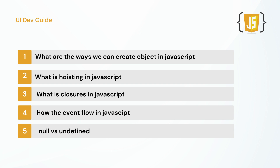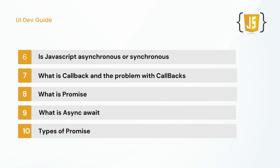The next question is null and undefined. This is also a common question. It is related again to hoisting. Null is a kind of variable we can assign, while undefined means a variable exists but we have not assigned any value to it — JavaScript assigns it undefined with the help of hoisting.